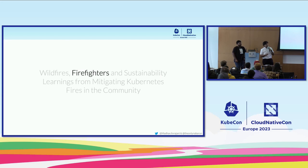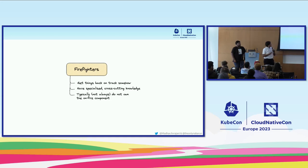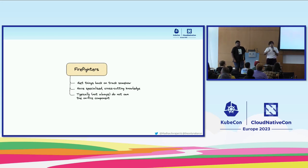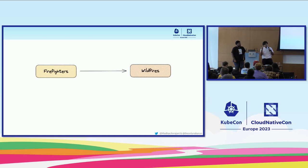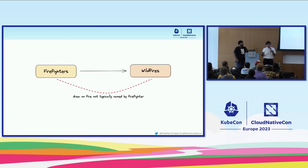Firefighters — what do I mean by the term? Firefighters typically get things back on track somehow. They have specialized and cross-cutting knowledge of the project. And typically, but not always, they don't really own the component that is on fire. These are the folks who do whatever is necessary to get things back on track using specialized cross-cutting knowledge that the actual component owners might not have. The area on fire is typically not owned by the firefighter — and this is the crux of the problem, because if a small set of firefighters leave, we might not be in a good position.